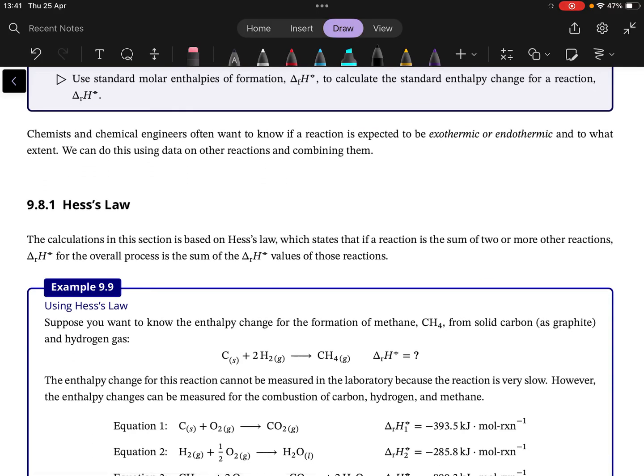So the first law that we will look at, our first way to calculate, is something called Hess's law. And what Hess's law essentially says is you can take a reaction where you have, say, A plus B giving C, and then you have C plus D giving F. You can sum those two reactions.